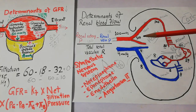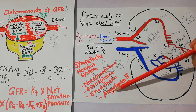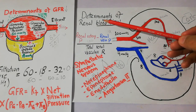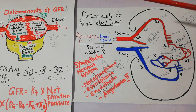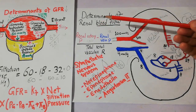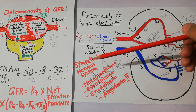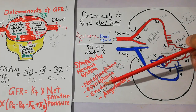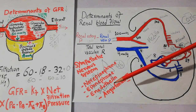Today in this lecture we are going to talk about concepts related to effects of angiotensin 2 on renal blood flow and GFR, glomerular filtration rate. As we have started discussing determinants of renal blood flow and we have discussed the effects of sympathetic nervous system, effects of norepinephrine, epinephrine, and endothelin — now it's the turn to discuss angiotensin 2.